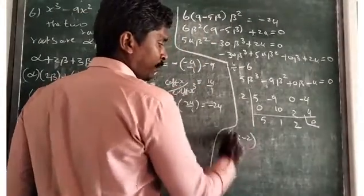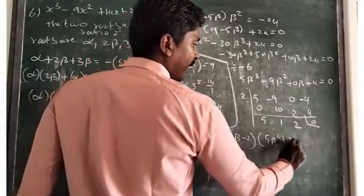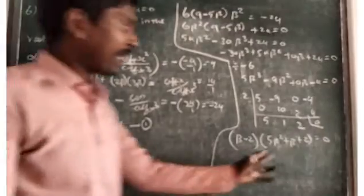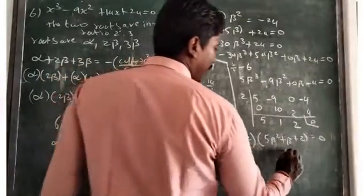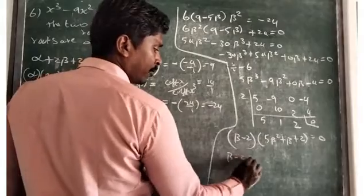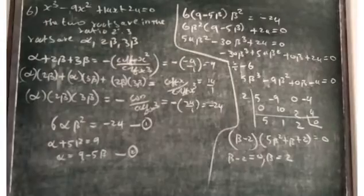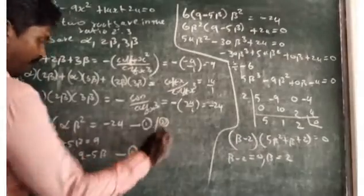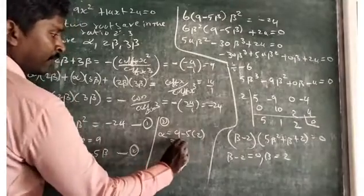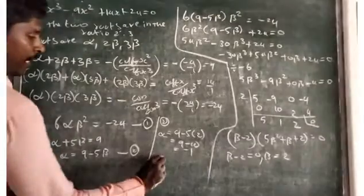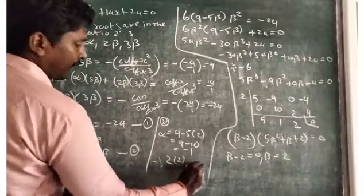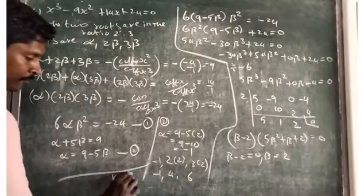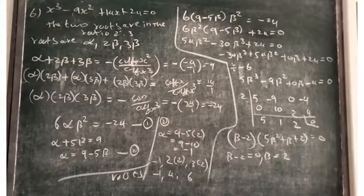Since beta equals 2, substituting into equation 2: alpha equals 9 minus 5 times 2 equals 9 minus 10 equals minus 1. The three roots are: alpha equals minus 1, 2 beta equals 2 times 2 equals 4, and 3 beta equals 3 times 2 equals 6. Therefore, the three roots of the polynomial are minus 1, 4, and 6.